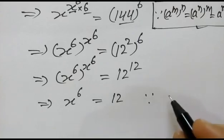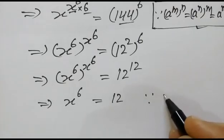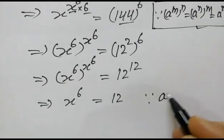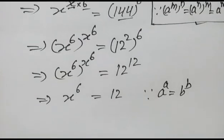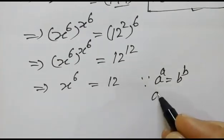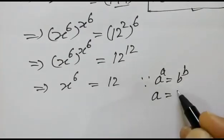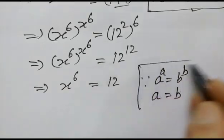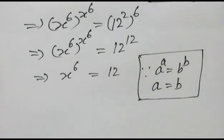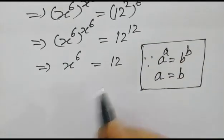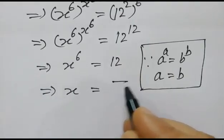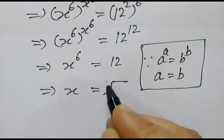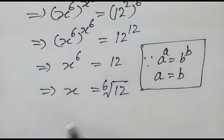Because if a to the power a is equal to b to the power b, then a must be equal to b. So x will be equal to the 6th root of 12. Okay friends, thank you.